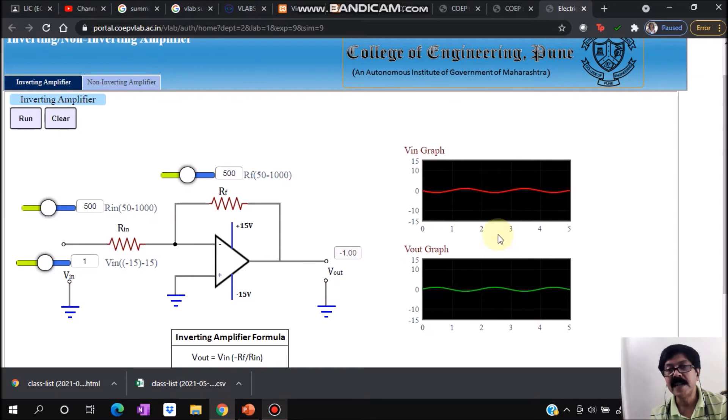Let us increase the input voltage. I just increase it to 5 volt and I am running it. So I am getting the output voltage is -5 volt. And now see the increase in amplitude. So in this way you can select the gain as you desire.